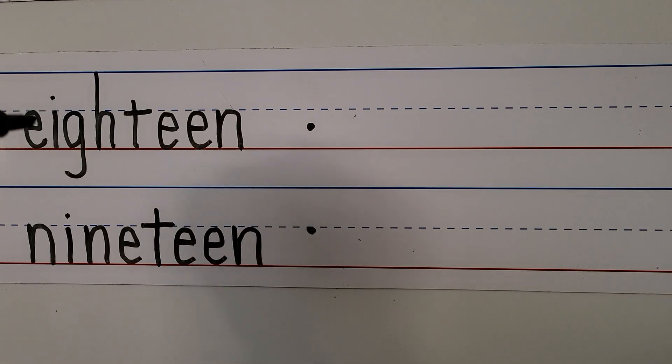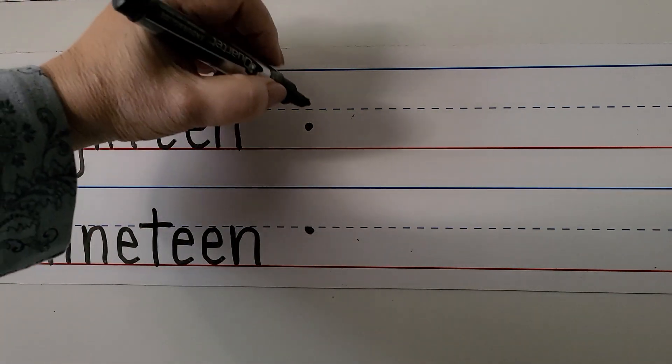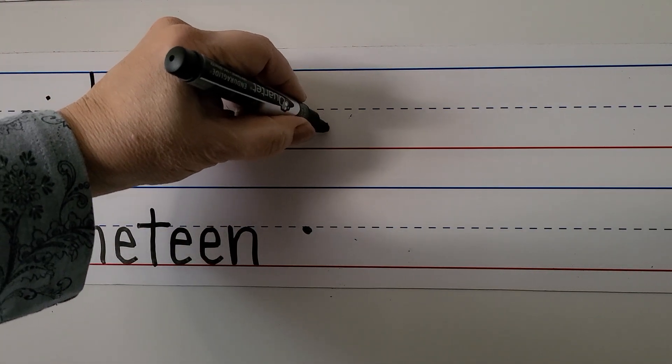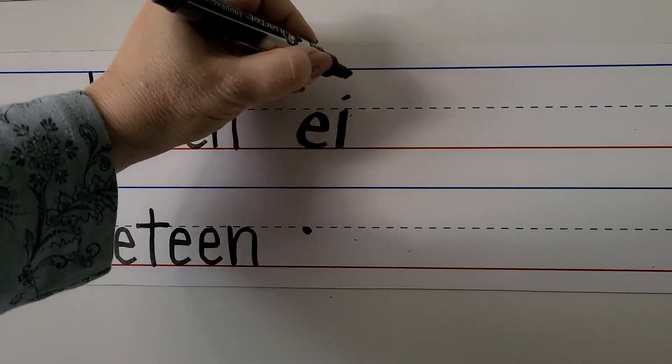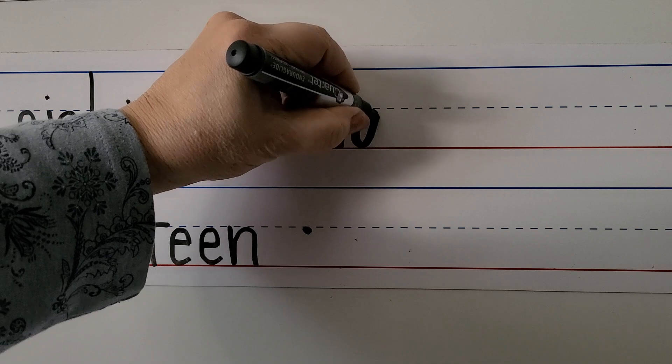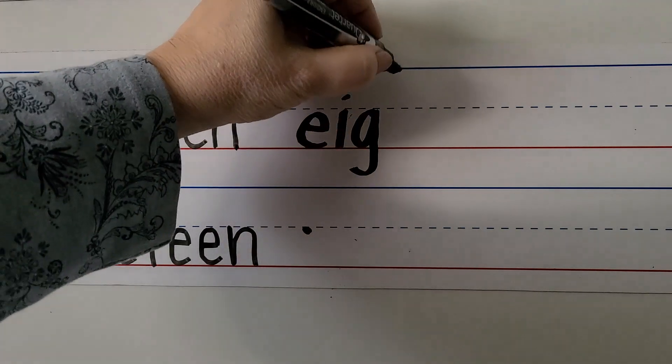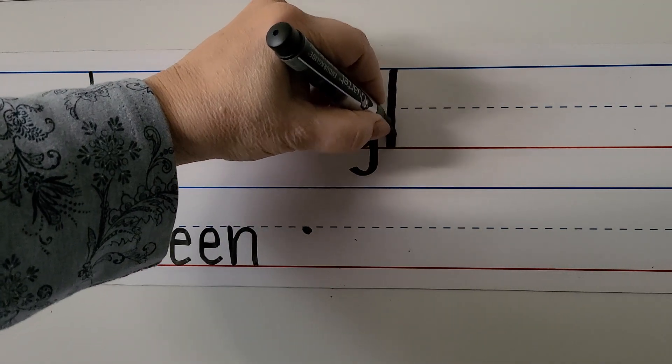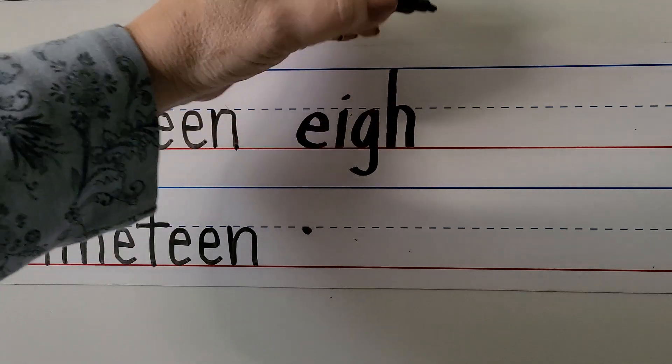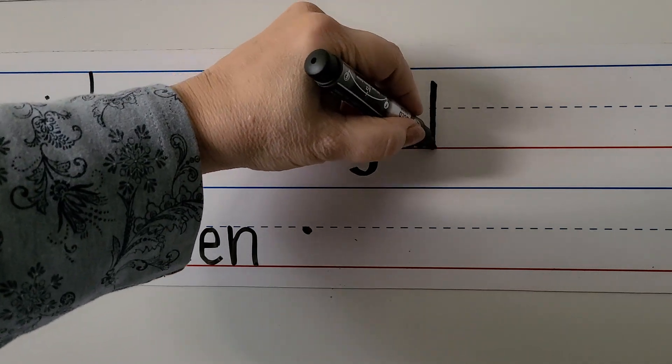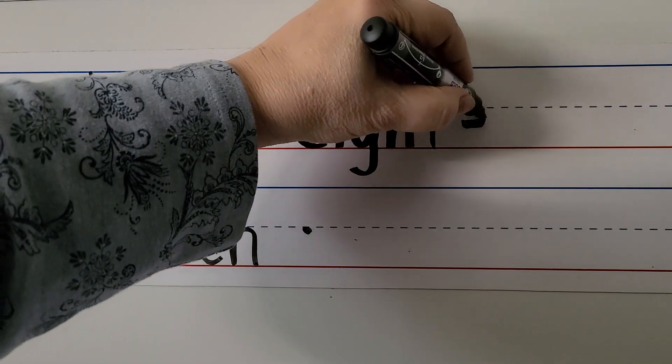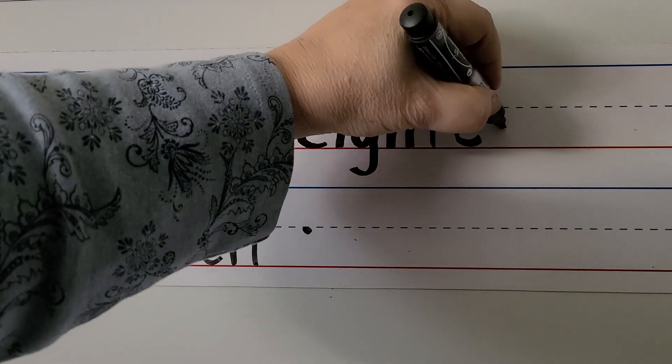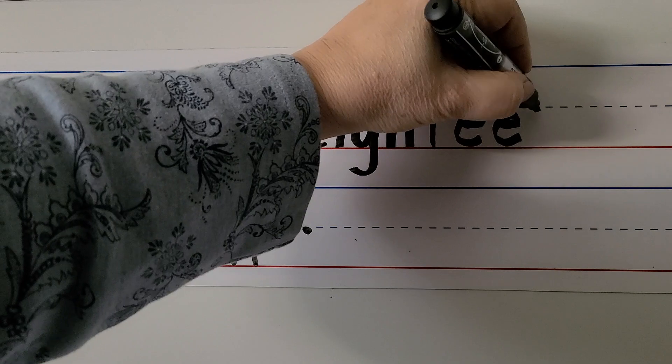We can write the word 18. We're going to start here with an E. We're going to push away, then come up and around: I, G. And again, G goes into the basement. H, T. We're going to go on this side and pull towards our hand: E, E, N. Eighteen.